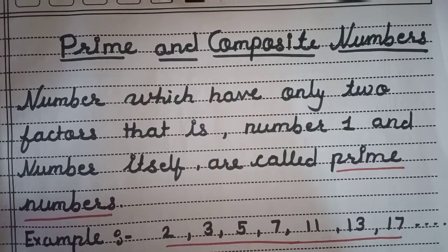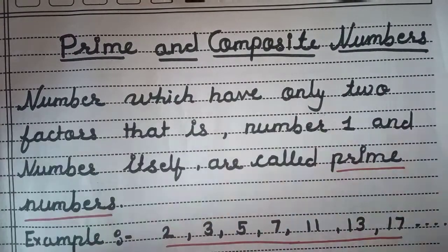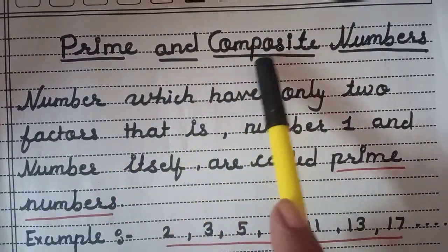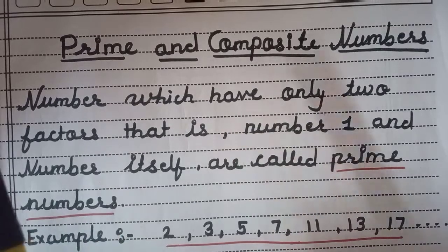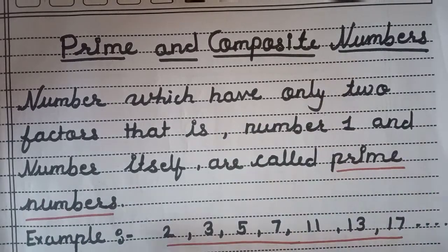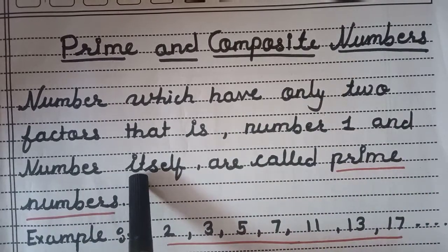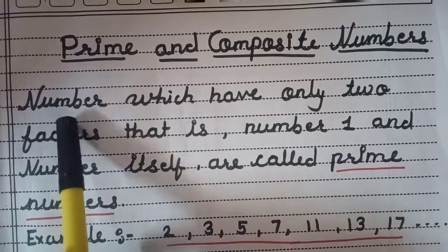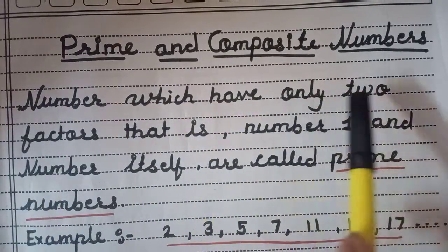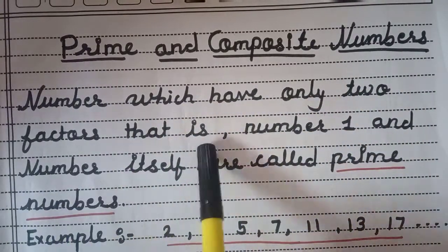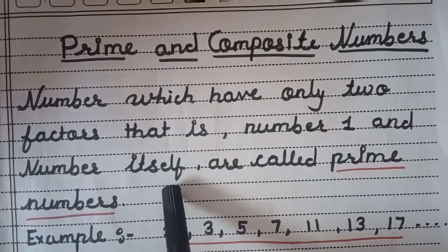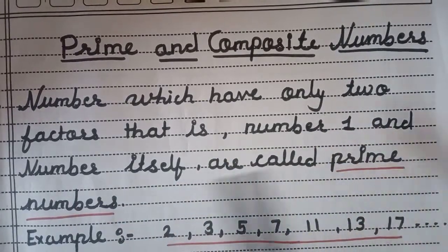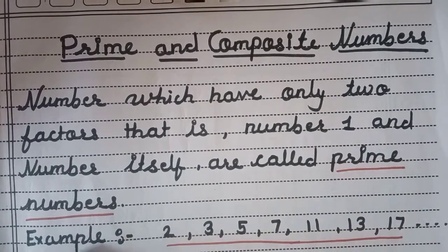Good morning students. Today we are going to learn about prime and composite numbers. First, let's see what are prime numbers. A prime number is defined as a number which has only two factors — that is, 1 and the number itself. For example?